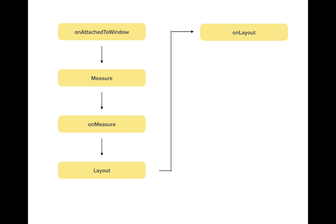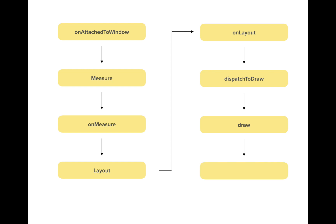Now comes dispatchDraw. At this moment your ViewGroup invokes this method to let all the parent views know that they can now draw their child views. Accordingly, draw and onDraw get called, where all the parent views and their child views draw themselves in your custom view window. This is, in a nutshell, how custom view drawing works.